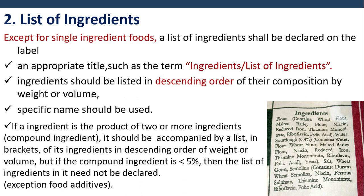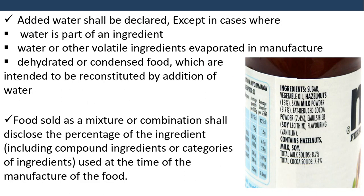The compound ingredient's sub-ingredients should be listed in descending order of weight or volume. However, if the compound ingredient is less than five percent, the list of its ingredients need not be declared — except for food additives. If added food additives are present even when less than five percent, they must still be mentioned. Added water shall be declared, except in cases where water is part of an ingredient.